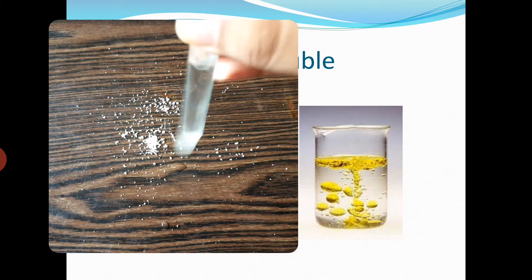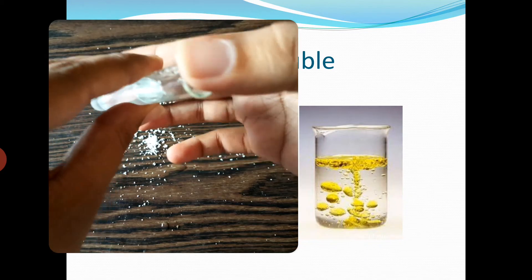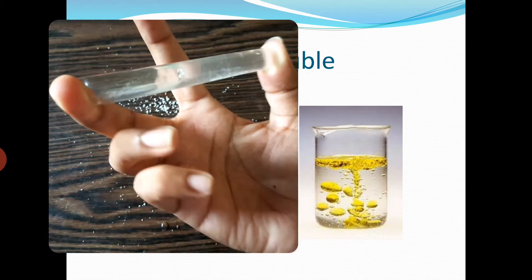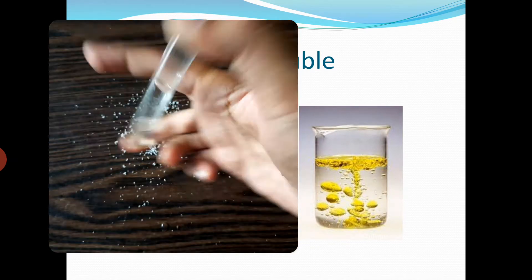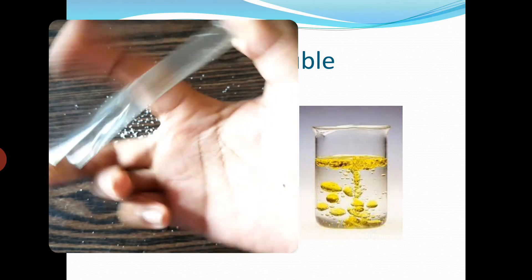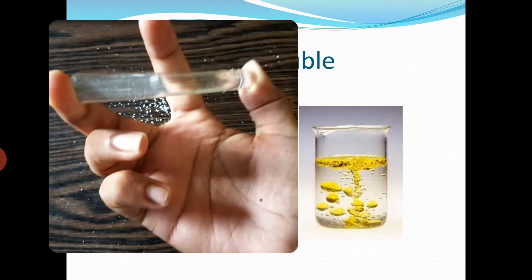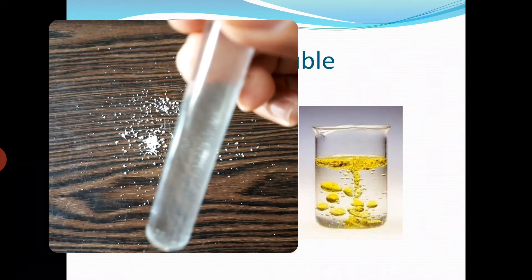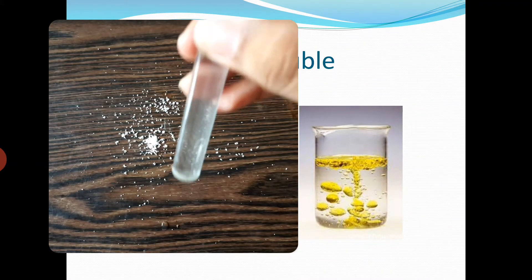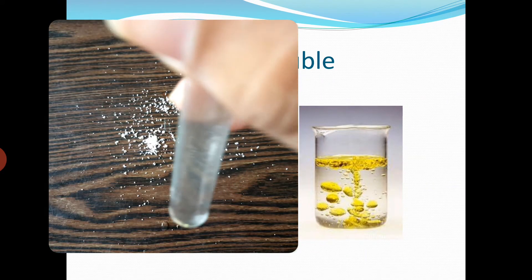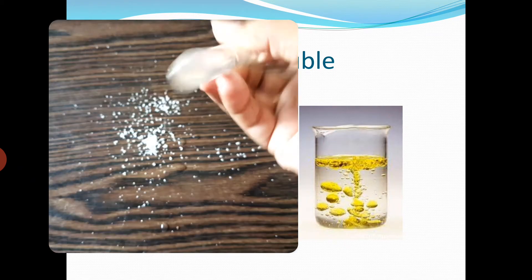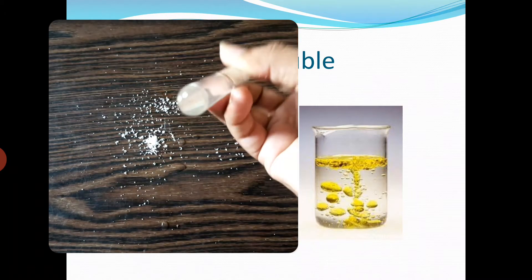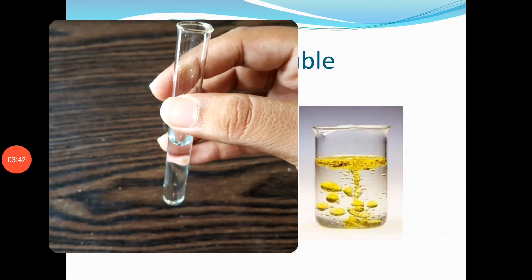Now let us stir. By stirring it, you can see that the salt is dissolving in the water. You can see the salt has dissolved in the water — it is in dissolved form. So by this we can say that salt is in a soluble form.